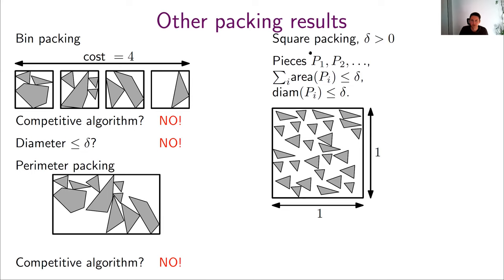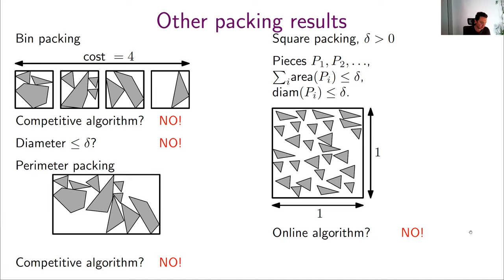We also have a problem called square packing with a parameter delta. We get a stream of pieces p1, p2, ... where the total area is at most delta and each piece has diameter at most delta. We want to know if there exists an algorithm that can pack all such streams online into a unit square. We prove that no such algorithm exists for whatever small value of delta. Even though you are asked to make an extremely sparse packing — because the area and pieces are so small — we can still trick any algorithm so that eventually there is not enough room for the next piece.